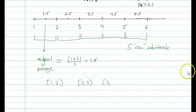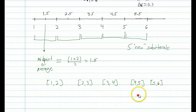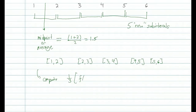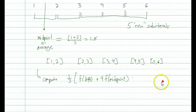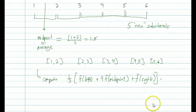Our new intervals are 1 to 2, 2 to 3, 3 to 4, 4 to 5, and 5 to 6 — five of them. We approximate the function by a parabolic arc over each of these subintervals. To compute the area underneath the parabolic arc, we use the 1/3 rule: for each subinterval, compute one-third times f of the left endpoint, plus 4 times the value at the midpoint, plus the value at the right endpoint, all multiplied by delta x.